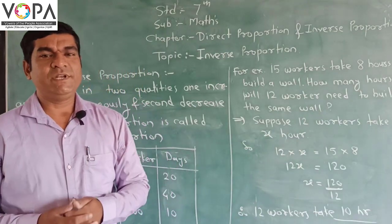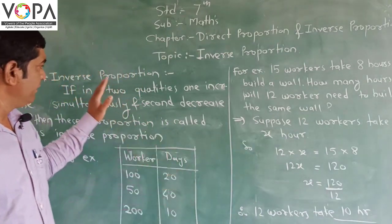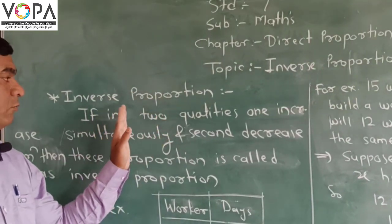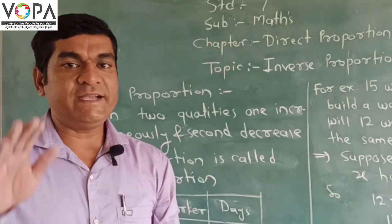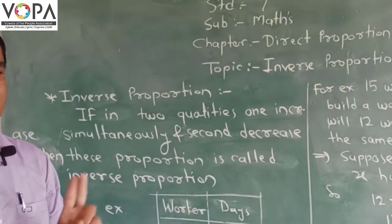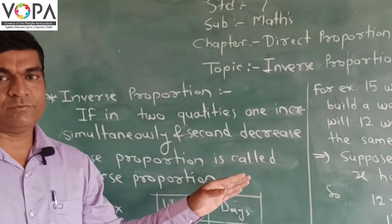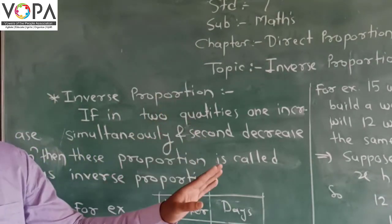First, we find the meaning of Inverse Proportion. Inverse Proportion means if we have two quantities and one increases while the second decreases at the same time, then we call this type of variation Inverse Proportion.